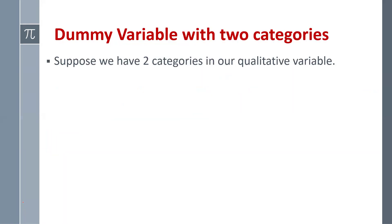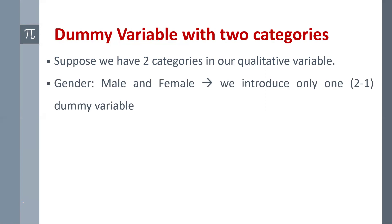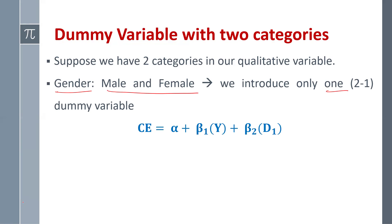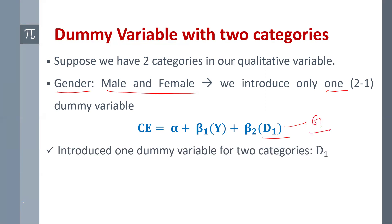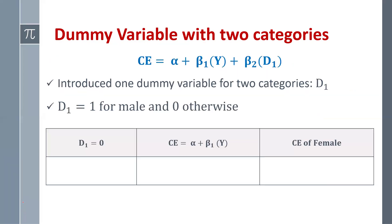Now suppose we have 2 categories in our qualitative variable. Let's see how to create a dummy variable with 2 categories. The variable is gender, with 2 categories — male and female — so we introduce only 1 dummy variable. The function is: consumption expenditure equals alpha plus beta 1 times Y plus beta 2 times D1, where D1 is our dummy variable representing gender. D1 equals 1 for male and 0 otherwise. When D1 equals 0, beta 2 times D1 becomes 0, so consumption expenditure equals alpha plus beta 1 times Y — that is the consumption expenditure of female.